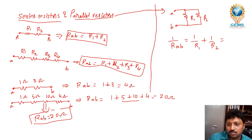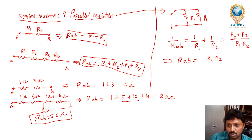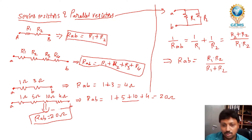Taking LCM, you can write this as R2 plus R1 over R1·R2. Then cross-multiplying, you get RAB is equal to R1 into R2 divided by R1 plus R2. This is how you find the total resistance.